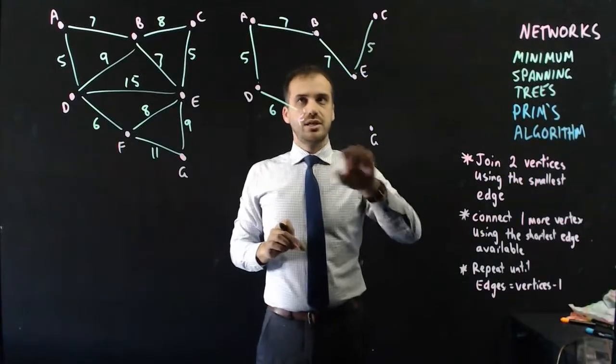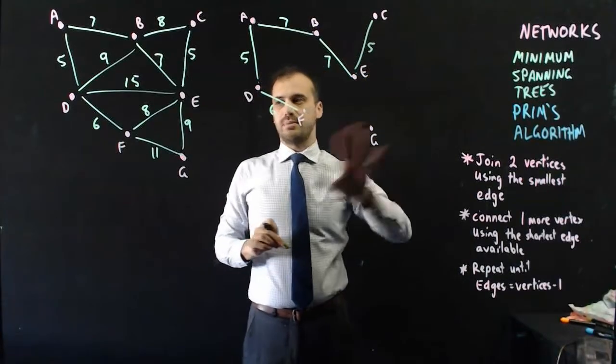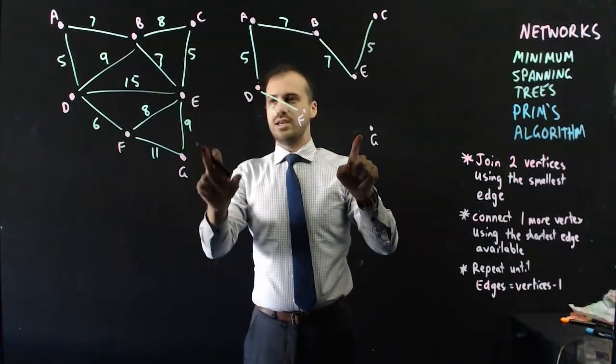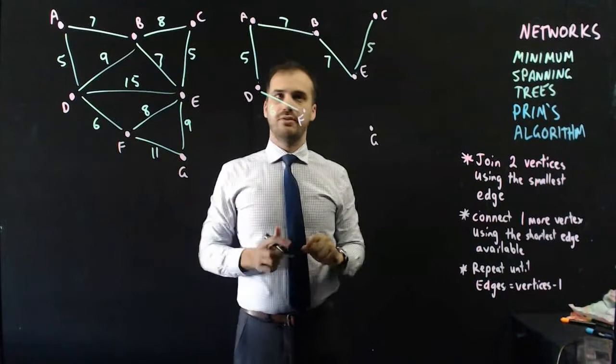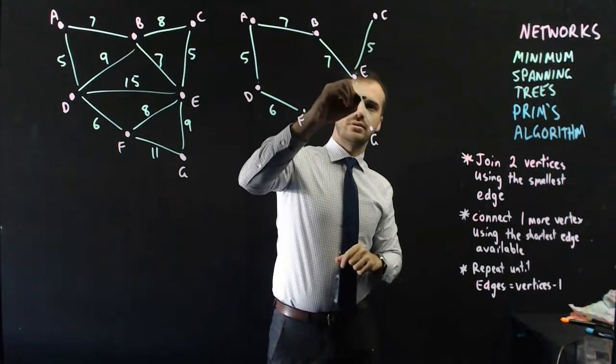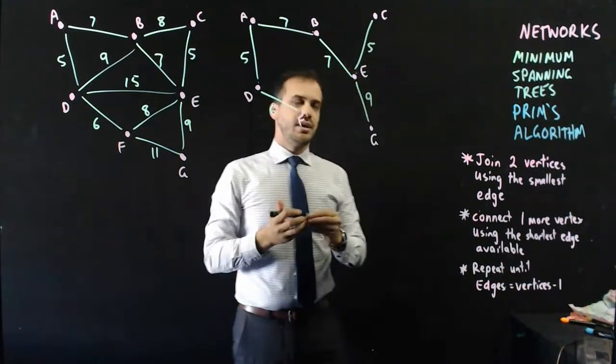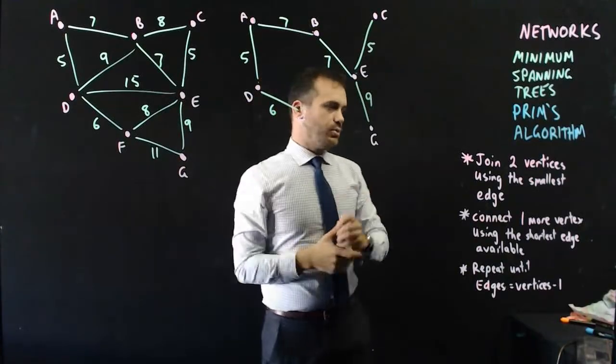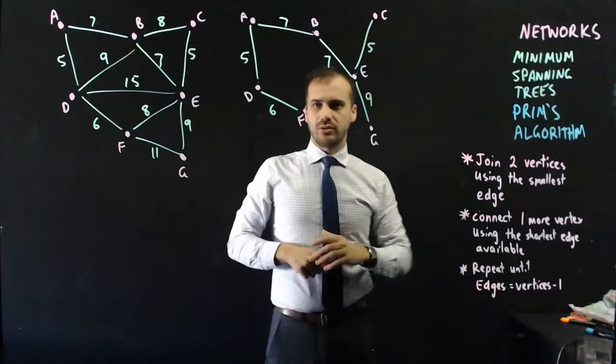Finally, G needs to connect to all of these somehow. G can connect using the 9 to E or the 11 to F. It should use the 9. And there, we have a minimum spanning tree for this network using Prim's algorithm.